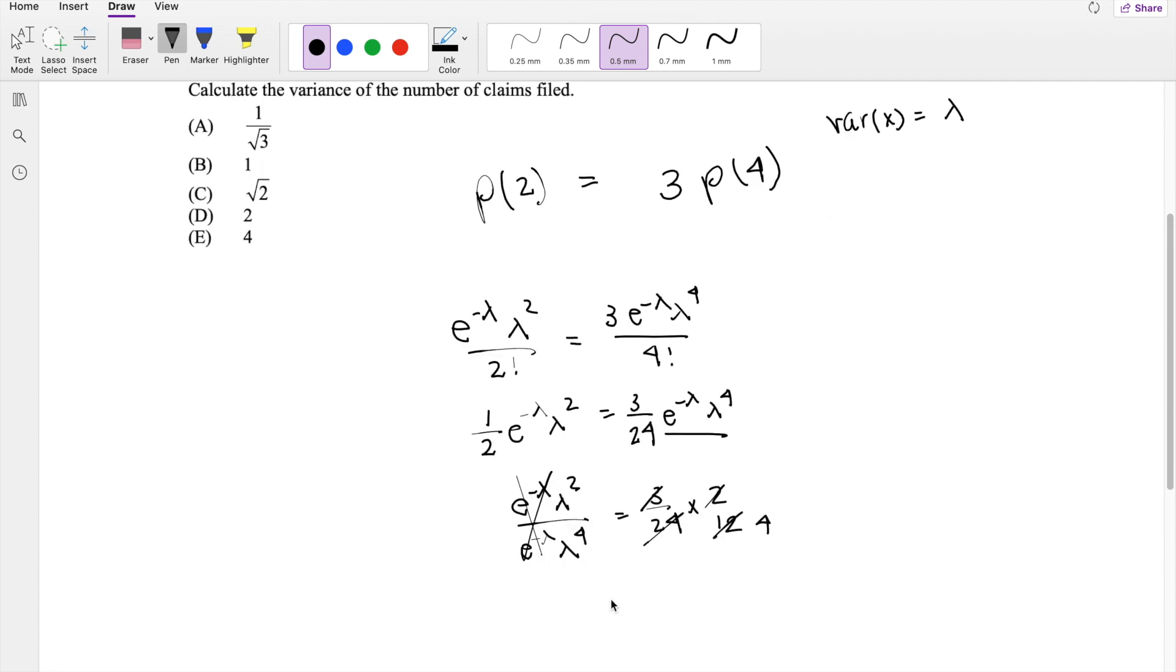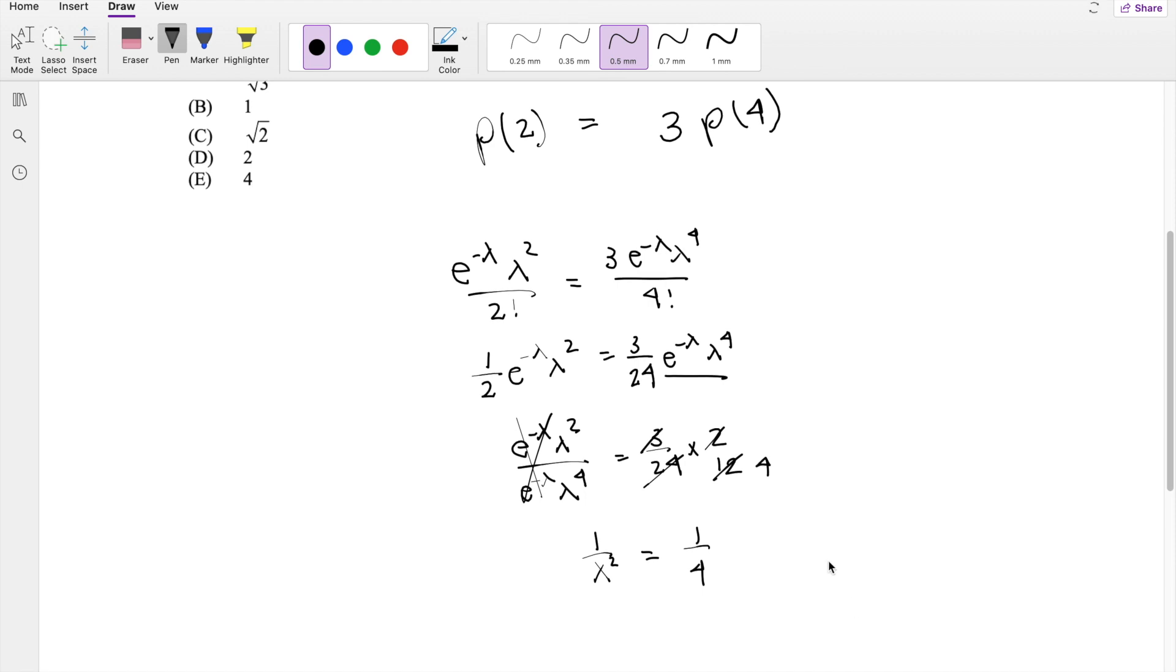And then we can cancel these out. So you're left with one over lambda squared equals one over four. In other words, lambda squared equals four, or lambda equals square root of four, which equals two, or answer D.